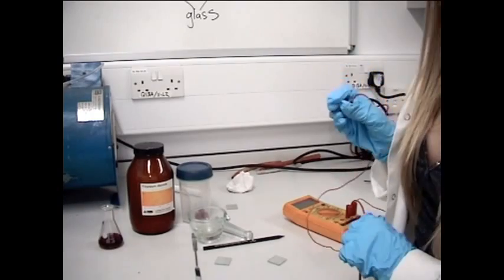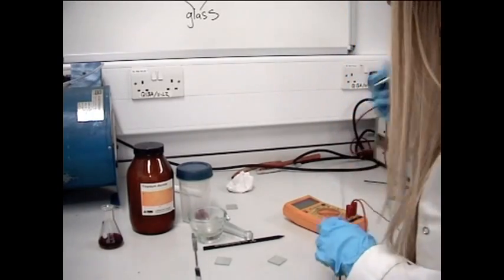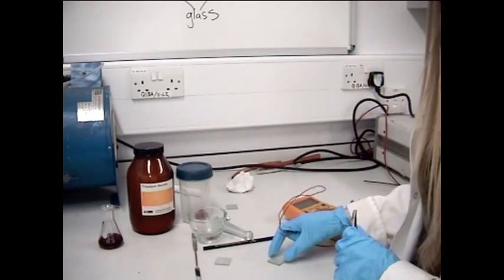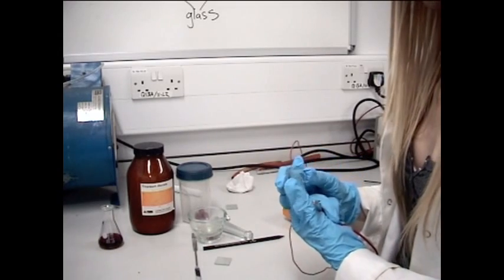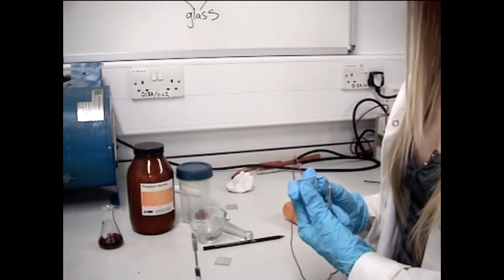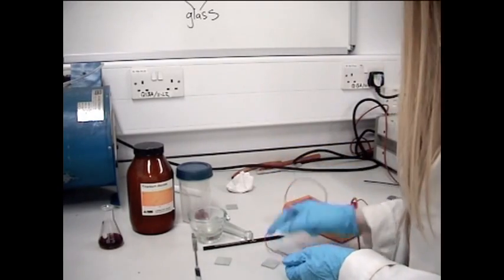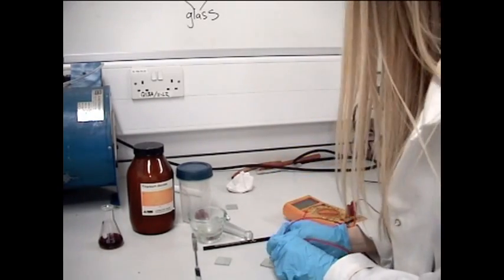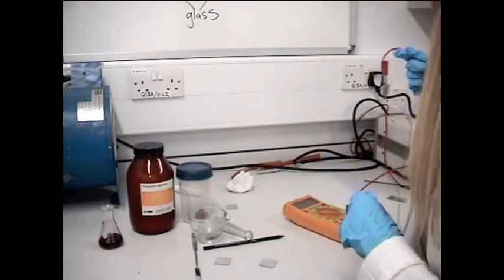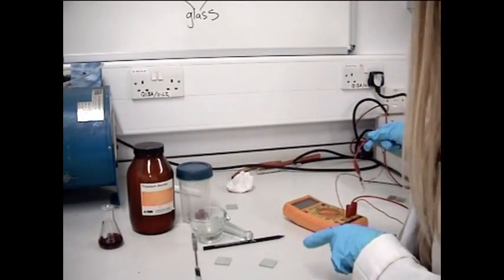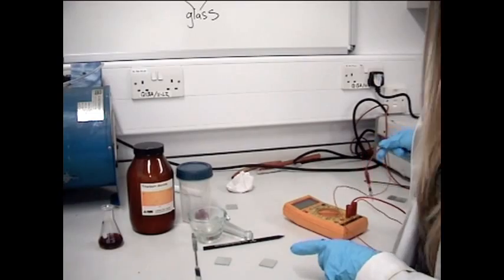So now I've got my goggles on, which is very important. I'm now going to just see which side of this glass is conducting, because on one side of this glass there's a conducting film, and on the other side there's not. So we want to find which side we want to use. So that beep tells us that this is the conducting side. So this is where I want to put my titanium dioxide.